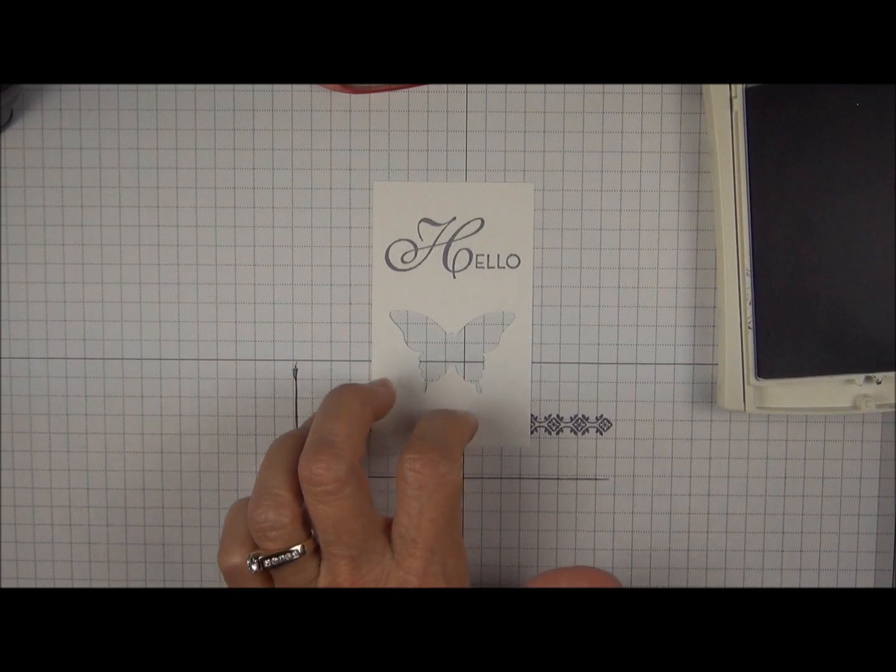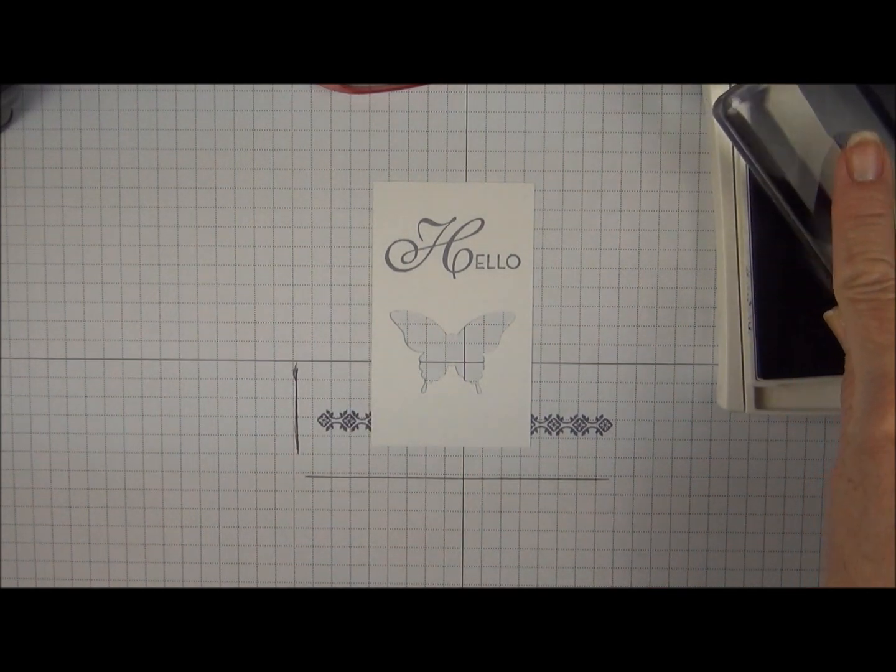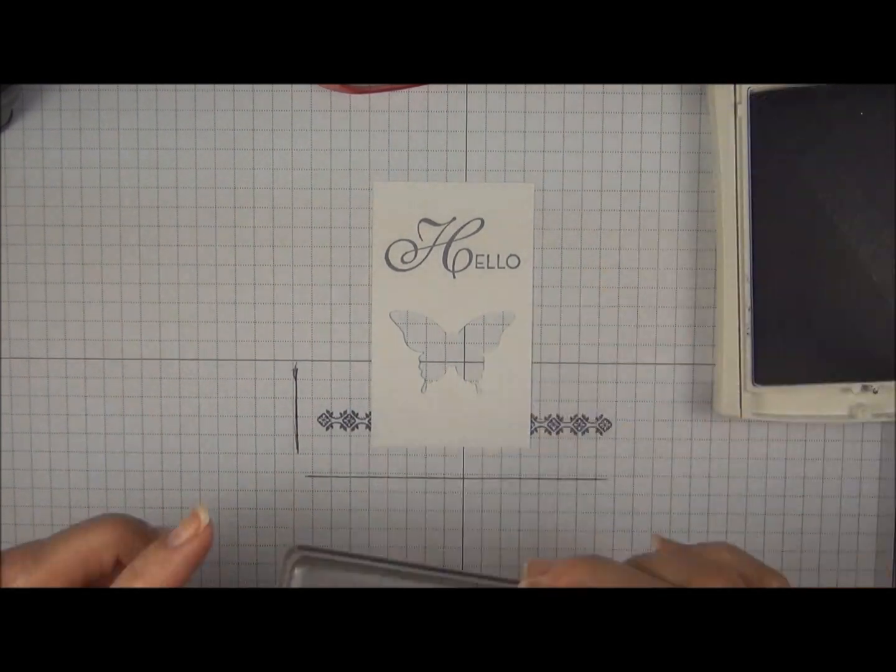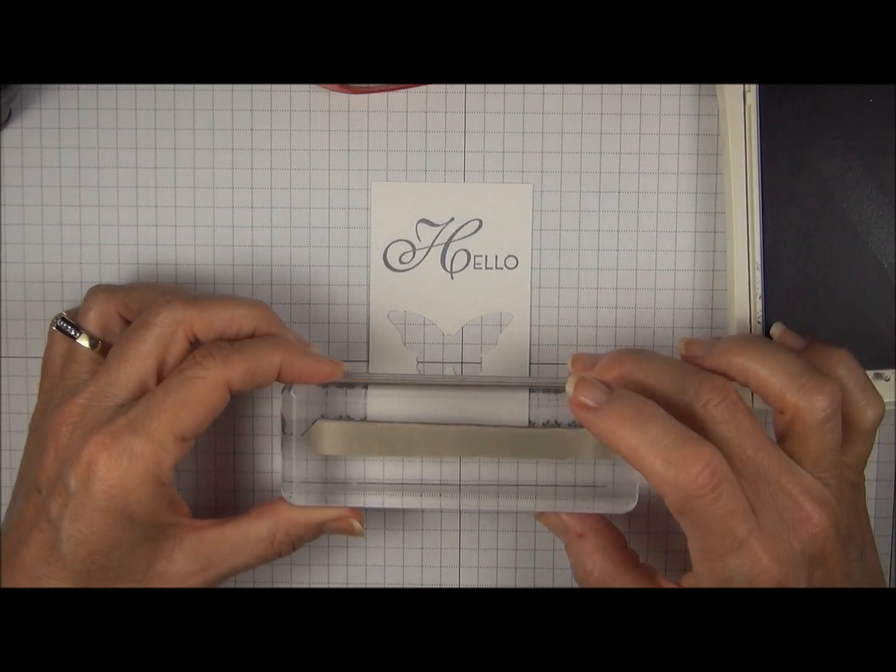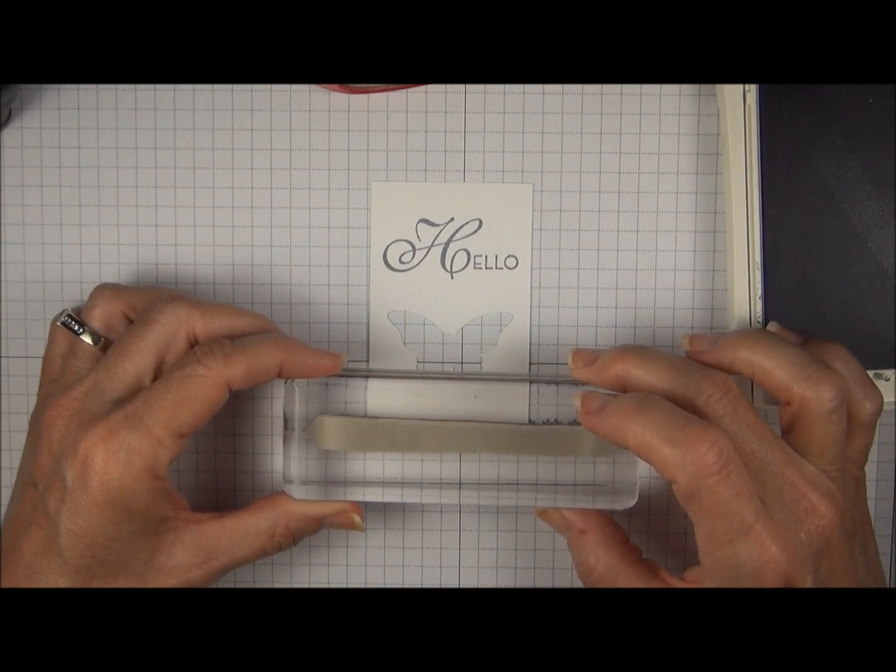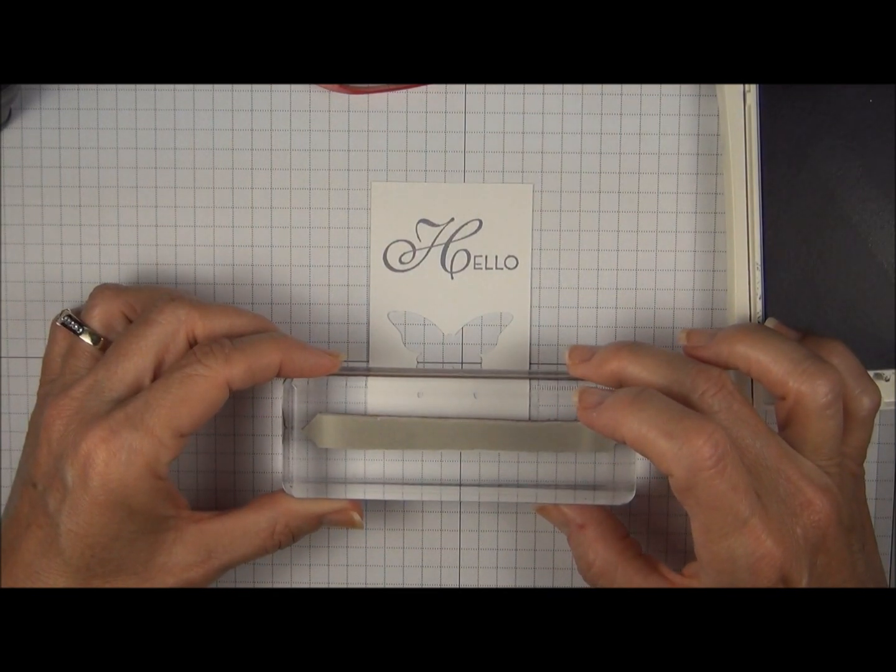And we'll see how that works. So we'll go back to the ink pad, tap tap, and I'm going to line up the left side right where I marked it on the grid paper and the bottom as well.